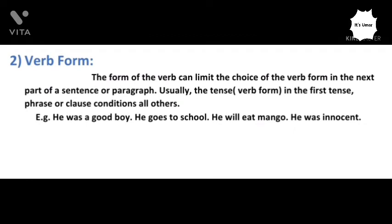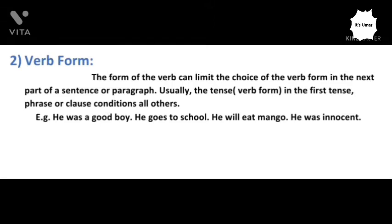The second formal link is verb form. The verb form in the first sentence, phrase, or clause conditions all the others which come next. For instance, if we say: 'He was a good boy. He goes to school. He will eat mango. He was innocent.' Such kinds of sentences are wrong in a single paragraph, where we shift from past tense to present to future and back to past.